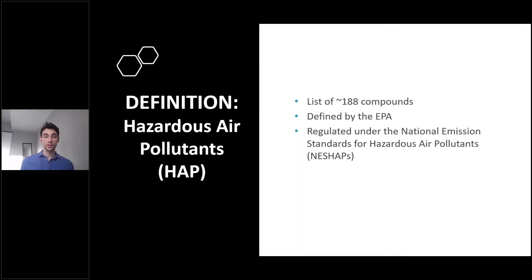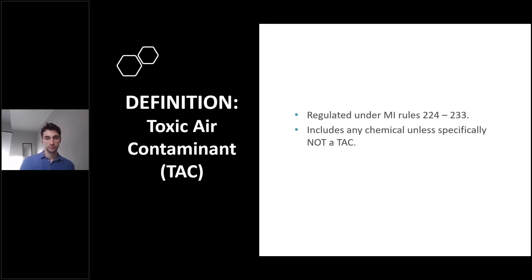There are many other families of air contaminants, but we'll cover two more. The first is hazardous air pollutants, or HAPs. HAPs are defined in a list of approximately 188 compounds identified by the EPA — approximately, because the EPA will occasionally add or remove a compound from the list. Facilities that emit these compounds are regulated through what's called National Emission Standards for Hazardous Air Pollutants, or NESHAP for short.